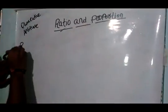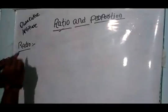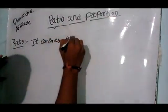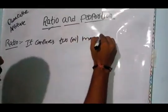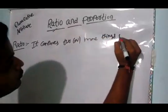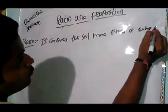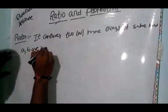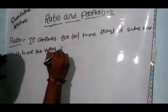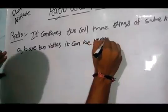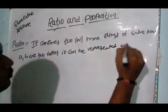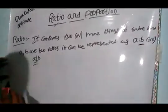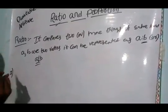First of all, I would like to discuss ratio. Ratio is defined as it compares two or more things of the same kind. Suppose if we have two ratios, it can be represented as a is to b, or a by b - any notation we have to follow. Here three types are present in this ratio.